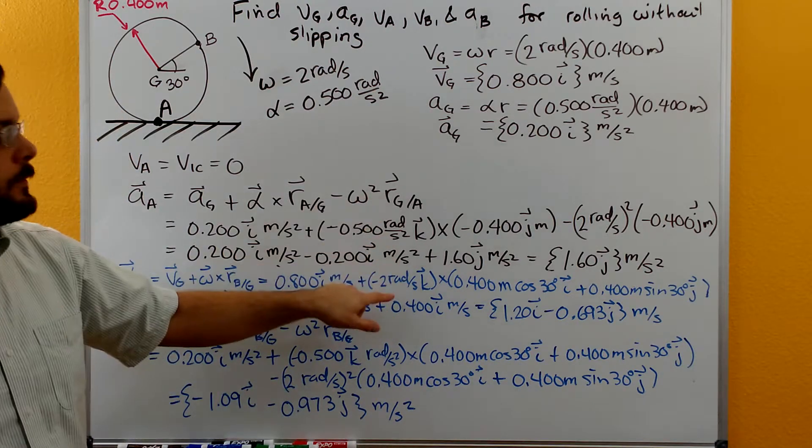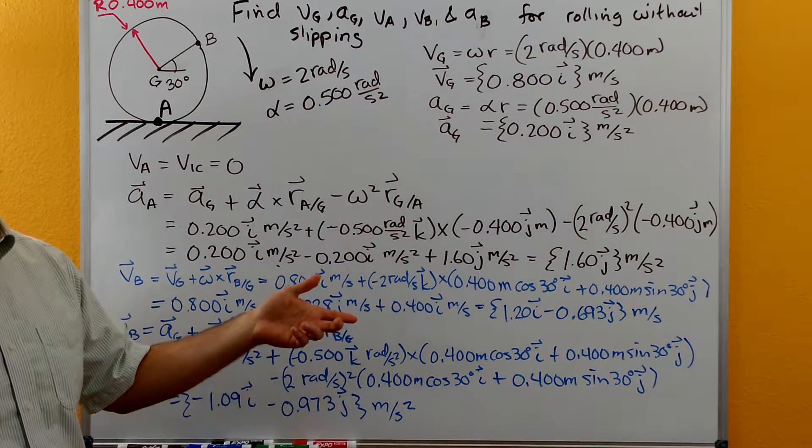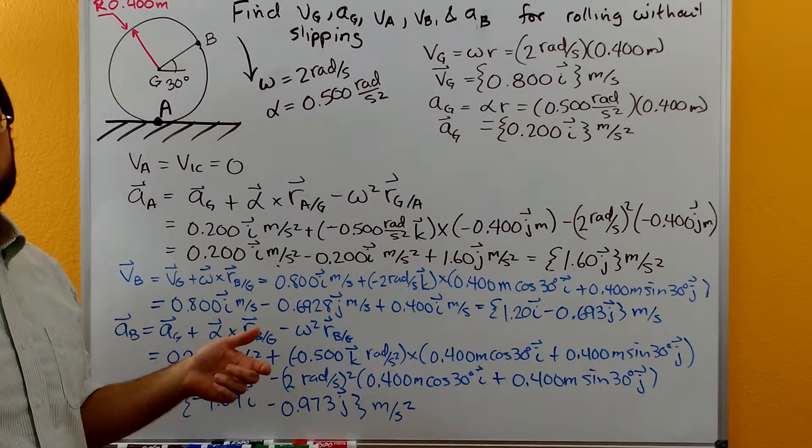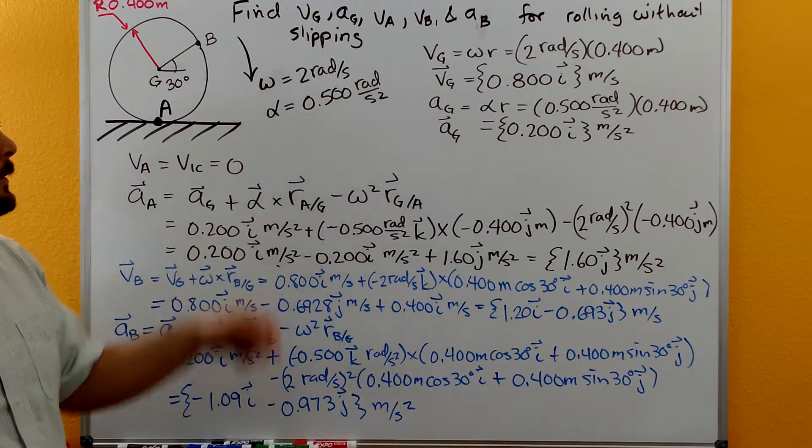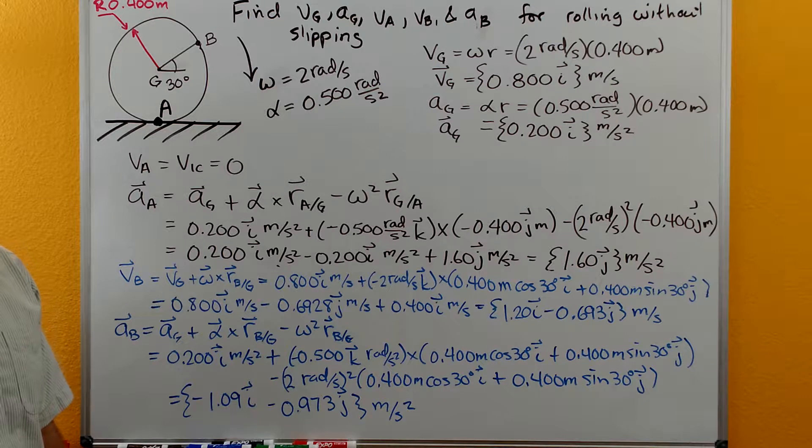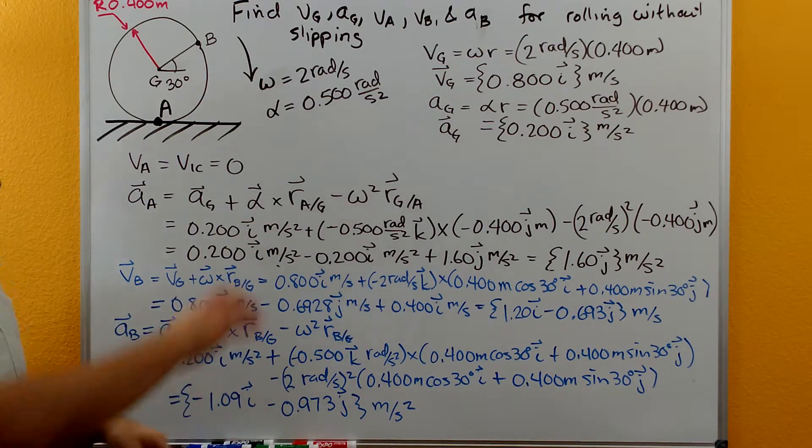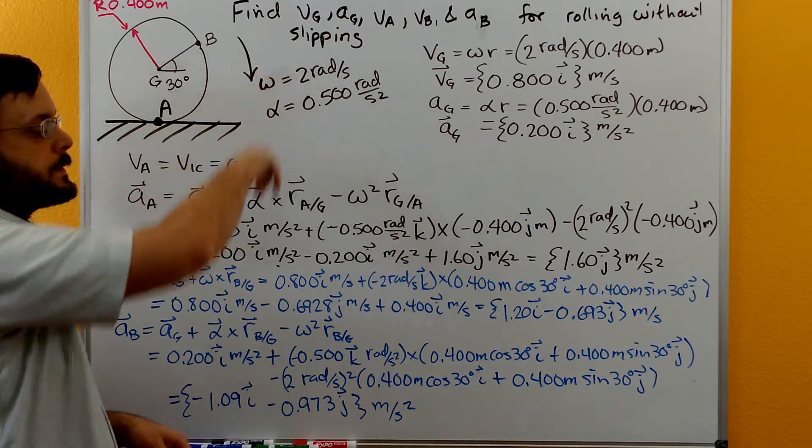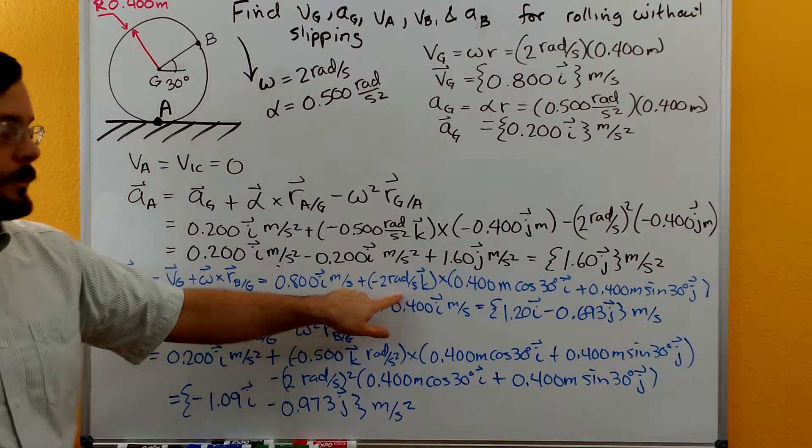Notice with all of these this is two-dimensional motion so both the alpha the angular acceleration and the omega term the angular velocity are going to be in the K direction. These are also both clockwise so they're going to both be negative K vectors.